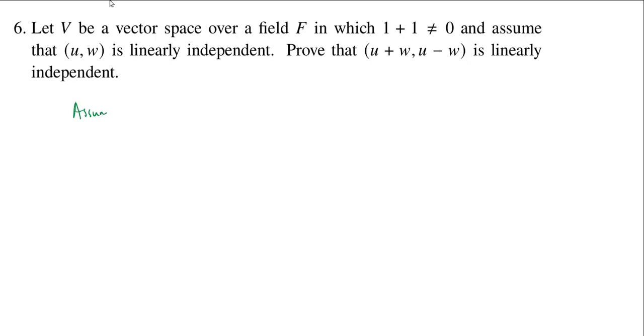So we're going to try to show that that's actually the only one. So we start by saying, assume a and b are in the field F such that a times (u plus w) plus b times (u minus w) is equal to 0.